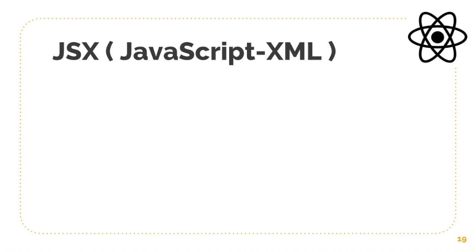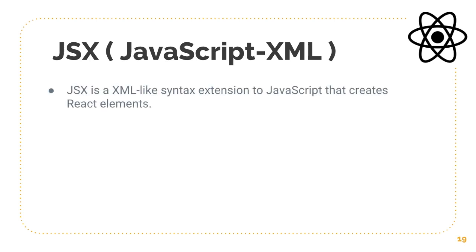In this video we are going to learn about JSX, which is JavaScript XML. It's an XML-like syntax extension to JavaScript that creates React elements. If you remember in our second video in this series, we learned that we can use React.createElement to create an element with a p tag or an h tag, and insert it into the DOM using ReactDOM.render. JSX will do that for us, so we don't have to write React.createElement.